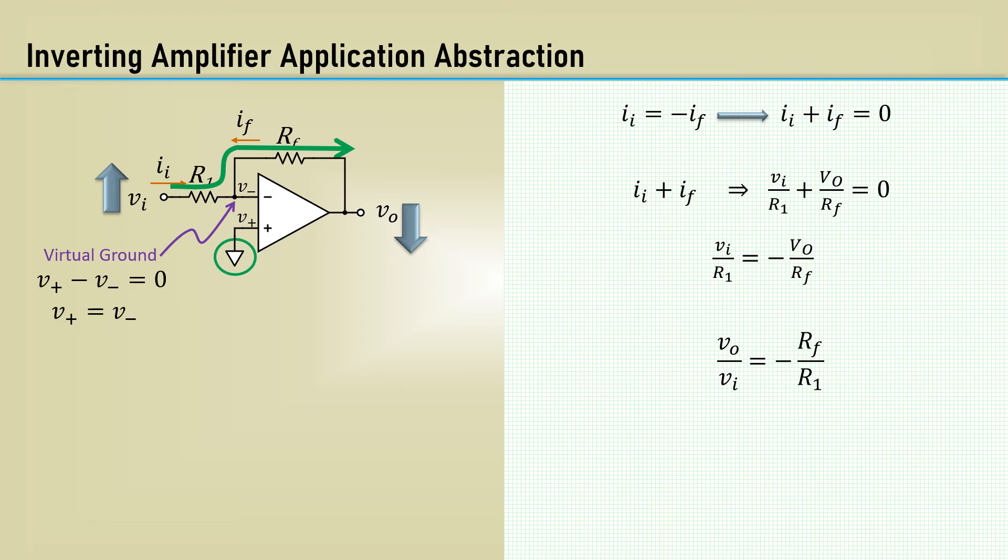This is the simple formula to select the resistor values for the gain you want. Since the non-inverting input is virtual ground, the right side of R1 is at zero volts and therefore the input resistance RI equals R1 because the other side of R1 is at virtual ground. Using the abstraction rules, the output impedance R sub O is zero ohms. A voltage controlled voltage source model is often presented showing the input resistance as R1 and the output voltage as minus RF over R1 times the input voltage.